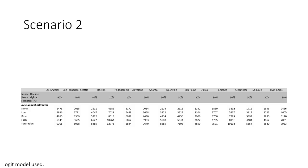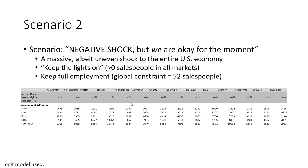Now let's consider another scenario. In this scenario we're not going to mess with the constraints so much, but rather we're going to consider how we might manipulate some of the input values elsewhere in the model to derive new predictions and forecasts. Let's imagine there was a giant exogenous negative shock to the entire economy, but the individual company is financially okay for the moment. We are determined to keep the lights on — we want to retain at least one salesperson in every one of our markets. We also want to maintain full employment: we won't entertain hiring new people during an economic crisis, but we won't fire anybody either. So we're going to stick to a global maximum of 52 salespeople, although they might have to move to alternative markets.